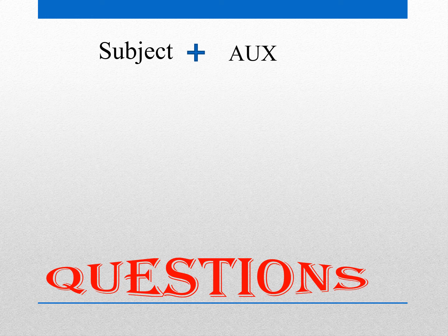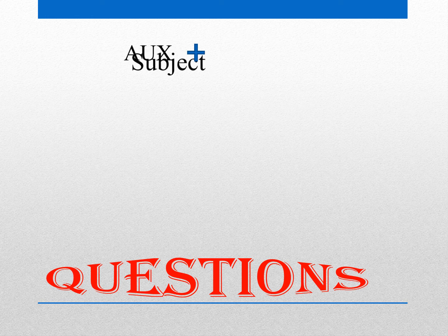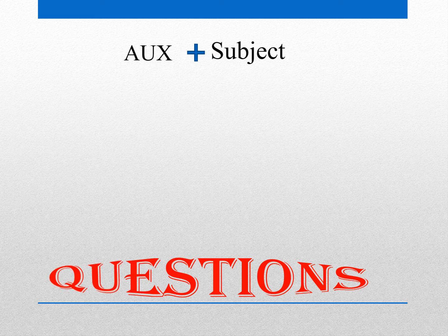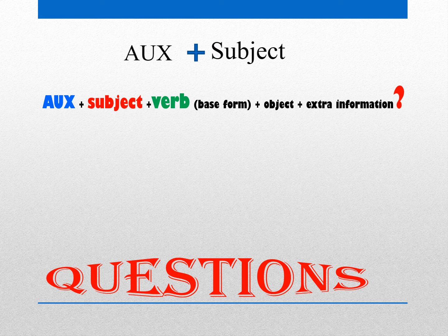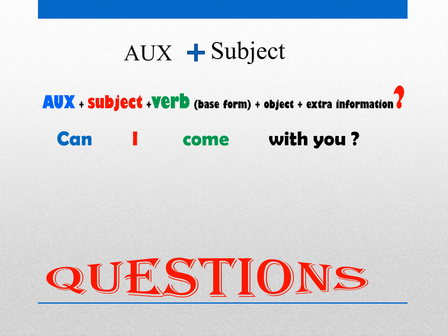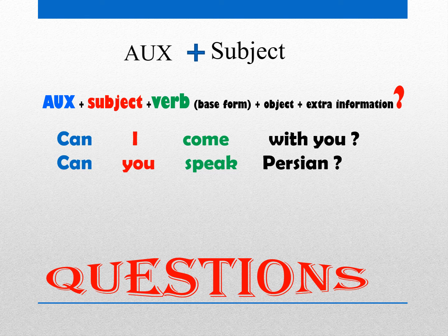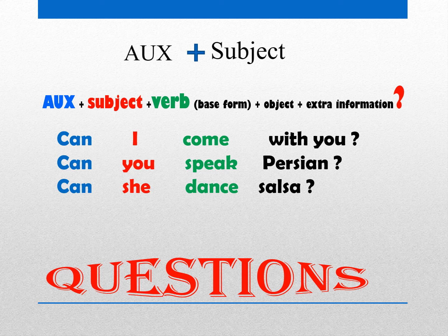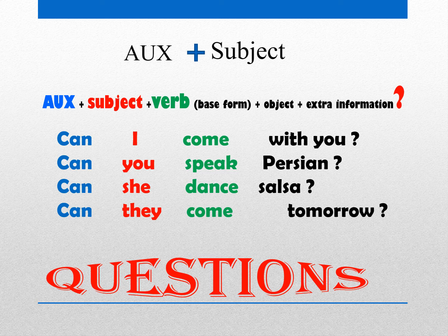و نهایتاً مدل سوالی یا همون question form که طبق معمول جای subject و auxiliary با همدیگه عوض میشه. میشه: auxiliary، subject، verb و ادامه سوالیتون. Can I come with you? Can you speak Persian? Can she dance salsa? Can they come tomorrow? Can you make it ready?